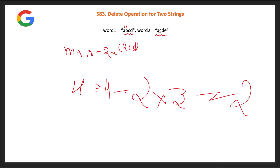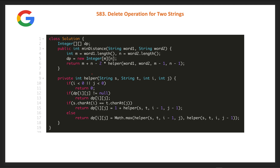Here is the LCS recursive solution with memoization — top-down DP. When one string becomes empty, return zero since no more common characters can be found. If the solution is already cached, return it. When both characters match, return one plus helper with both indices reduced by one. When they don't match, take the maximum of reducing one character from either the first or second string — the reverse idea from the previous edit-distance approach.